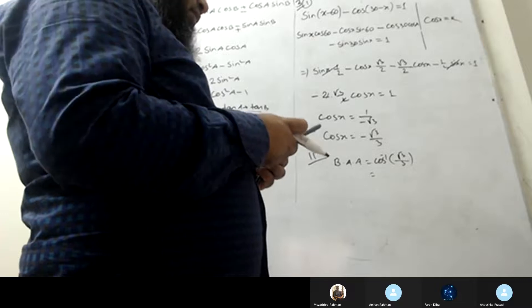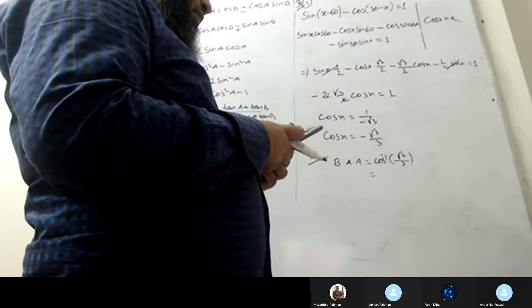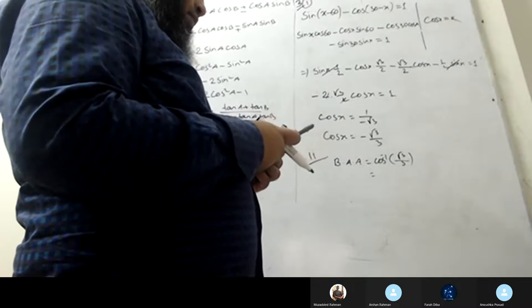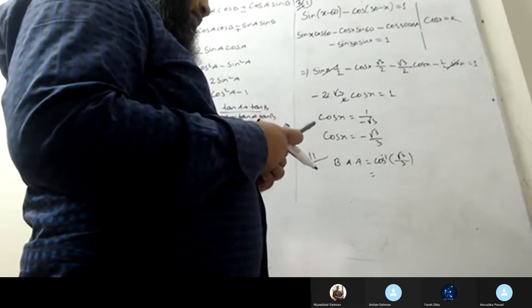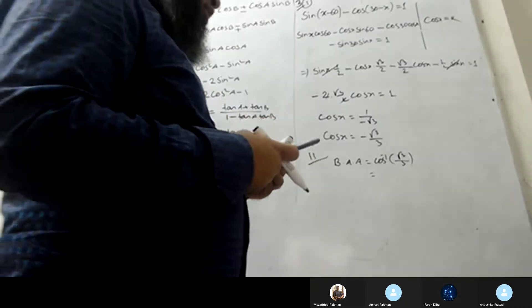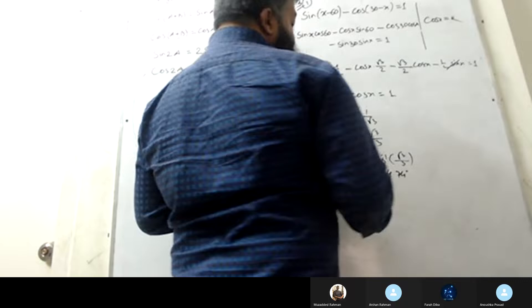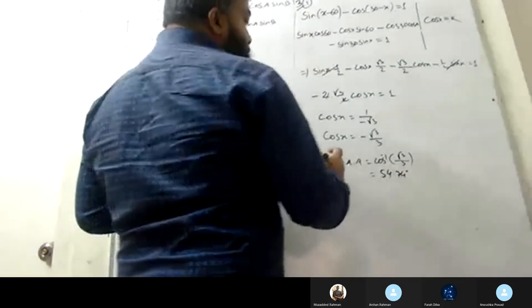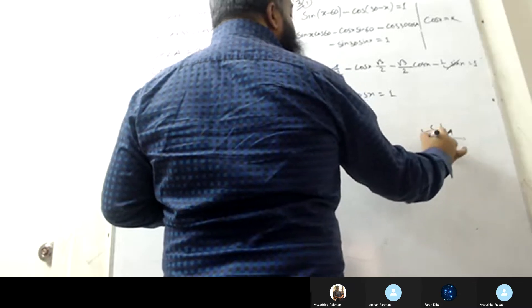Root 3 by 2. Cos inverse gives 54.74 degrees. It has 0 to 180 degrees. Cos function is negative in the second and third quadrant. So 2 times 90 plus and 2 times 90 minus.